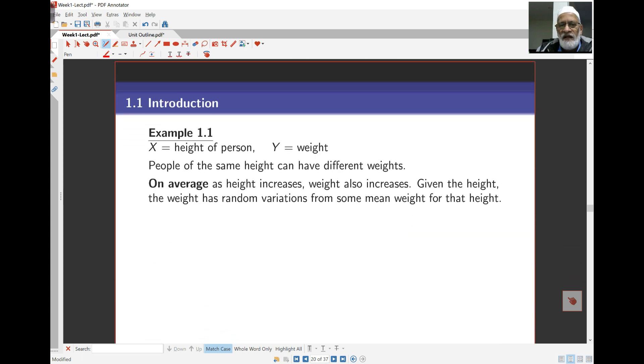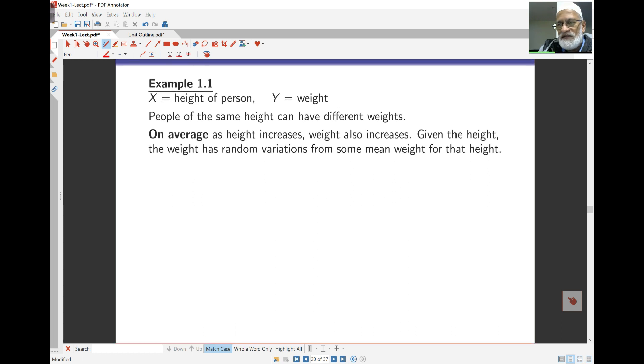As an example here, a simple example, let's take a look at X as the height of a person and Y as the weight of the person. Here we expect that the taller persons will weigh a bit more. Now of course people of the same height can have very different weights. On average though, as height increases, weight also increases. If I can draw a quick graph of what the situation may be like. Here is the height of a person, and here is the weight. So the data may look a bit like this. And so you might think that I can put in a straight line here to find a relationship between the X and the Y, in this case the height and the weight. Here is my line of best fit.